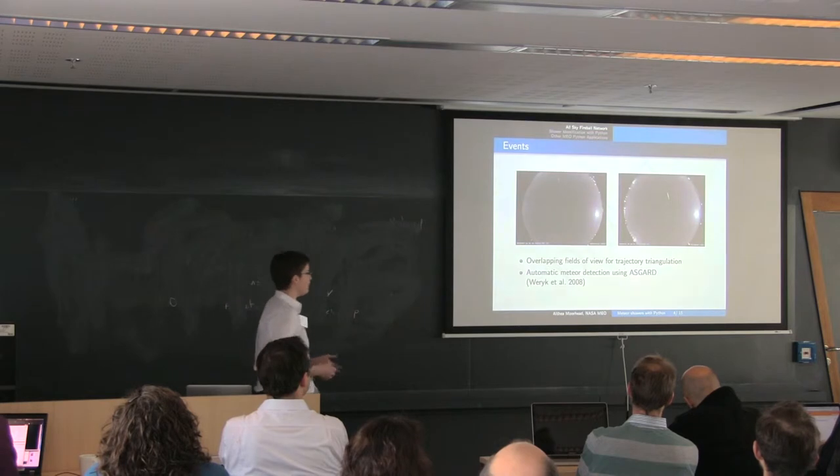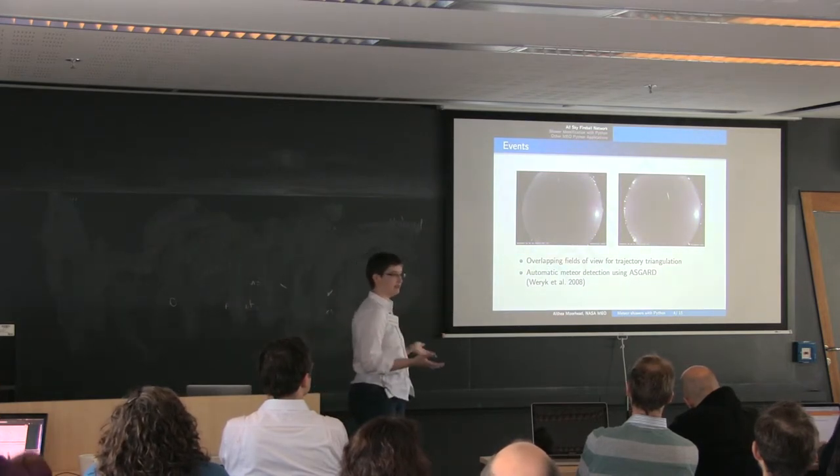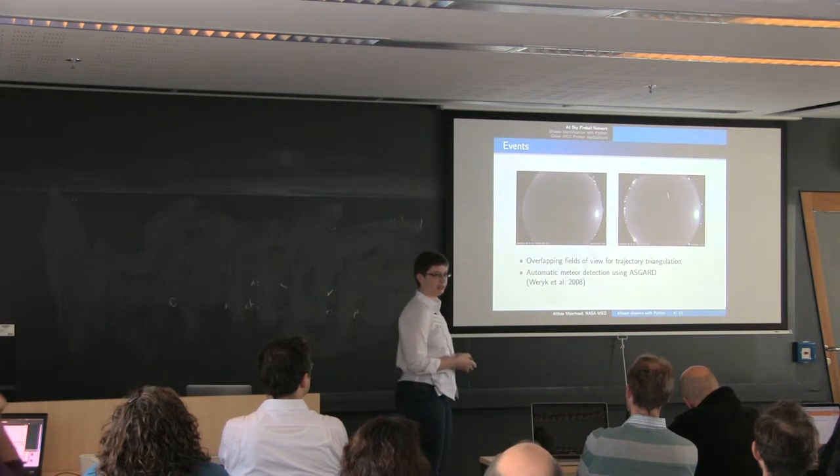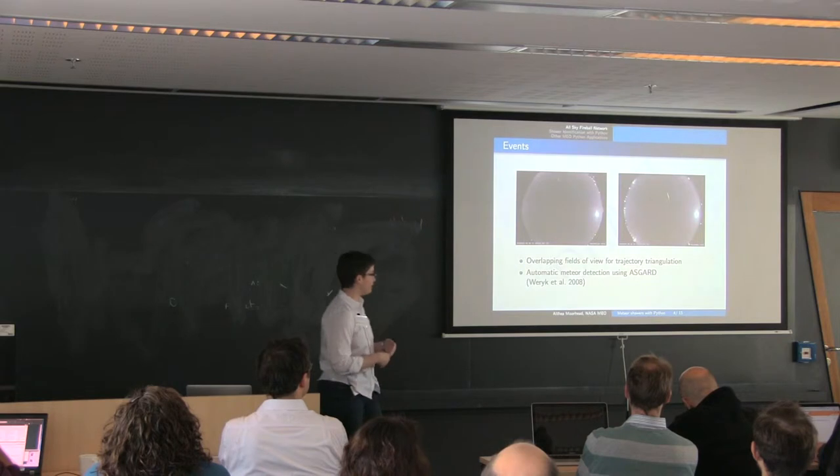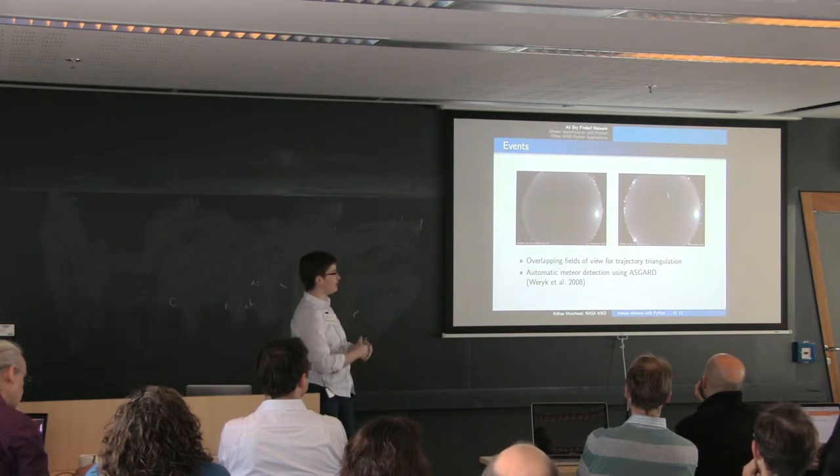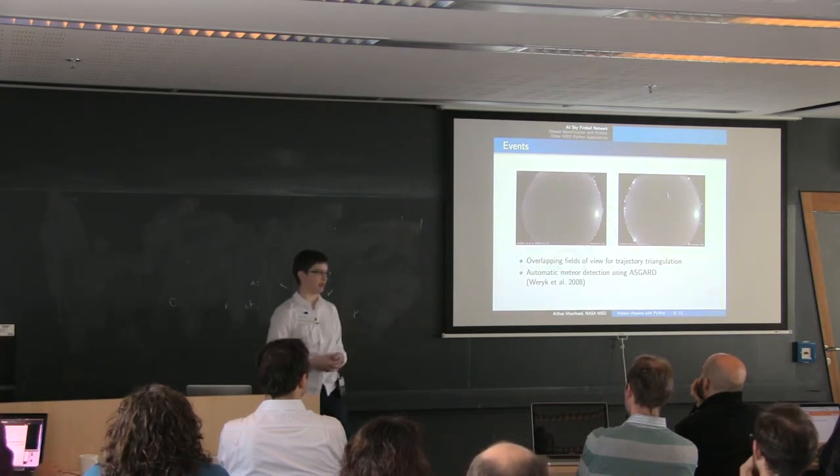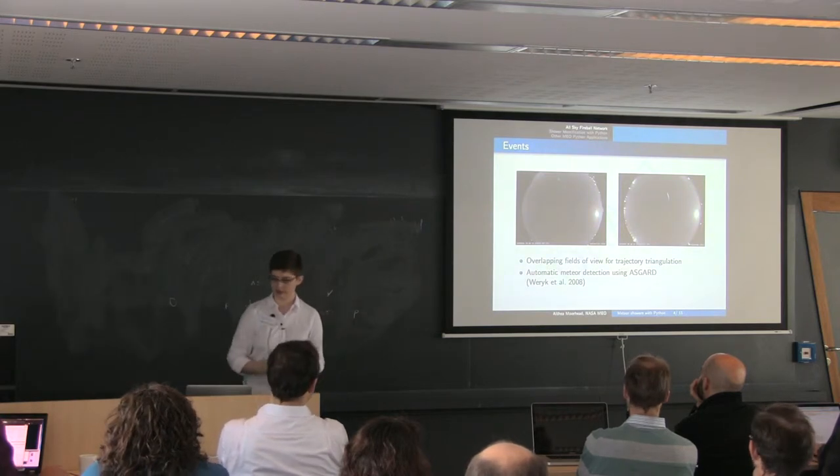Here's a sample event from our cameras. This is the same meteor observed by two different cameras. We place them so that they have overlapping fields of view, so we can triangulate their positions and trajectories. Right now the meteor detection and reduction is done using the Asgard software, and our priority is to have everything automated, so that every night Asgard runs and it gives us all the data in the morning to give us as close to real-time information as we can get about the meteor environment.